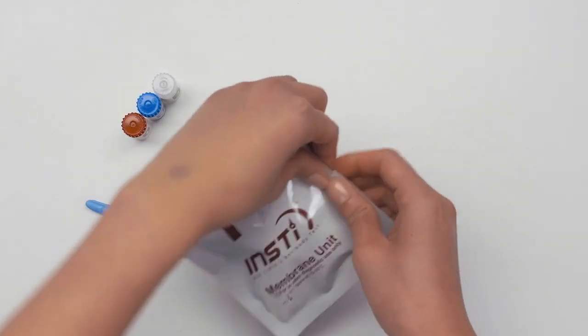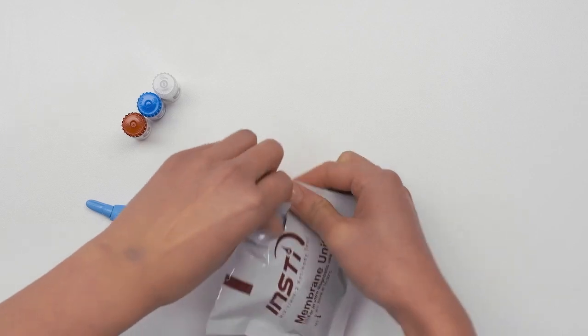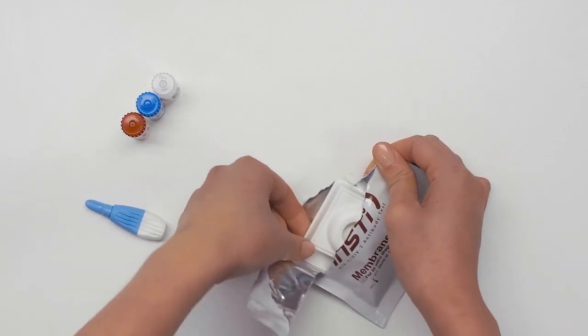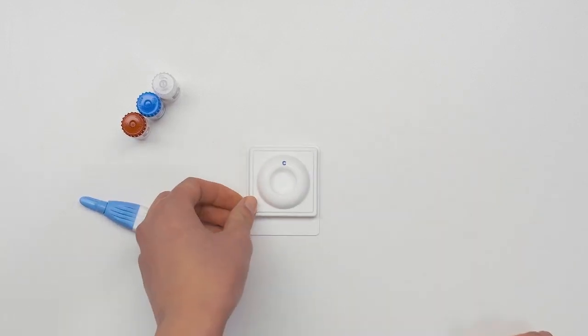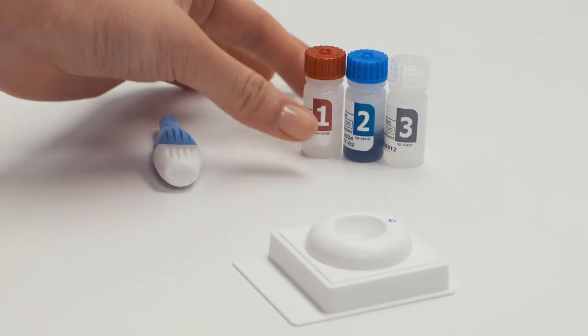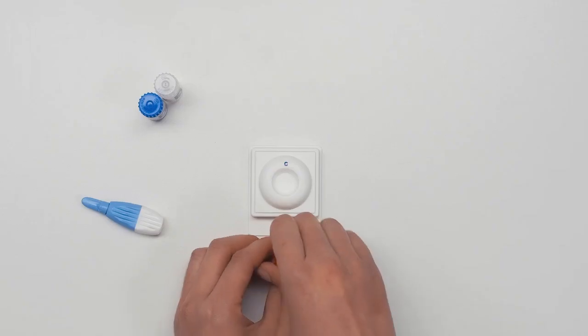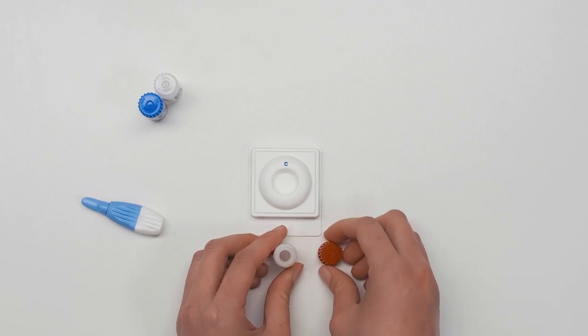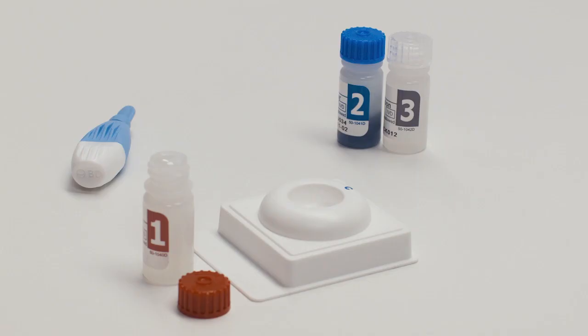When you're ready to start, open the test device pouch. Place the test device on a flat surface. Bottle 1: Remove the cap and place the bottle on a flat surface. Place the cap nearby to recap the bottle after you add the blood.